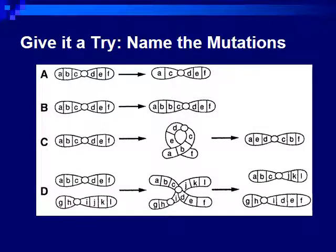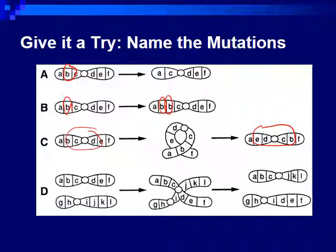I'd like you to pause the video and try to name all four chromosomal mutations before we continue. In example A, the B was removed — that would be deletion. In example B, the B was doubled — this is what we would call duplication. In example C, we originally had A, B, C, D, E, F, G, and after the mutation we have A, E, D, C, B, F — these were reversed, or inverted. And in our final example, we have two chromosomes exchanging information for different traits — that's a telltale sign of translocation. And that closes up this video on mutations.